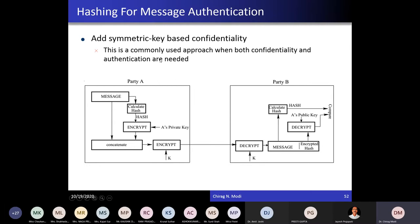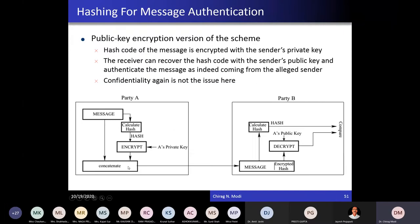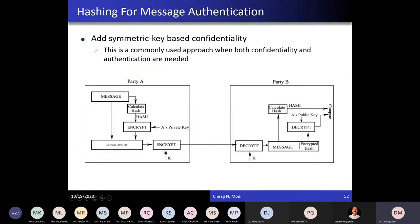Another version adds symmetric key-based confidentiality. From a message, you calculate the hash value, digitally sign that hash value, then perform concatenation and encrypt it using the symmetric key. This way you can achieve both message confidentiality and message authentication. In the previous case, you could not achieve message confidentiality, but here you can achieve both.